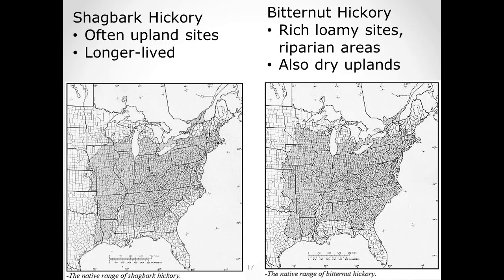Here are some range maps — Little's range maps from the historic record, very valuable for seeing where the normal distribution of a species was. Shagbark hickory is widely distributed, but up here we're at the northern end of its range, where it tends to grow on upland sites and is considered a longer-lived species. Bitternut hickory is supposed to like richer sites and riparian areas, though you also find it on dry uplands. We're pretty well within the range of bitternut hickory — it should be well adapted to this area.